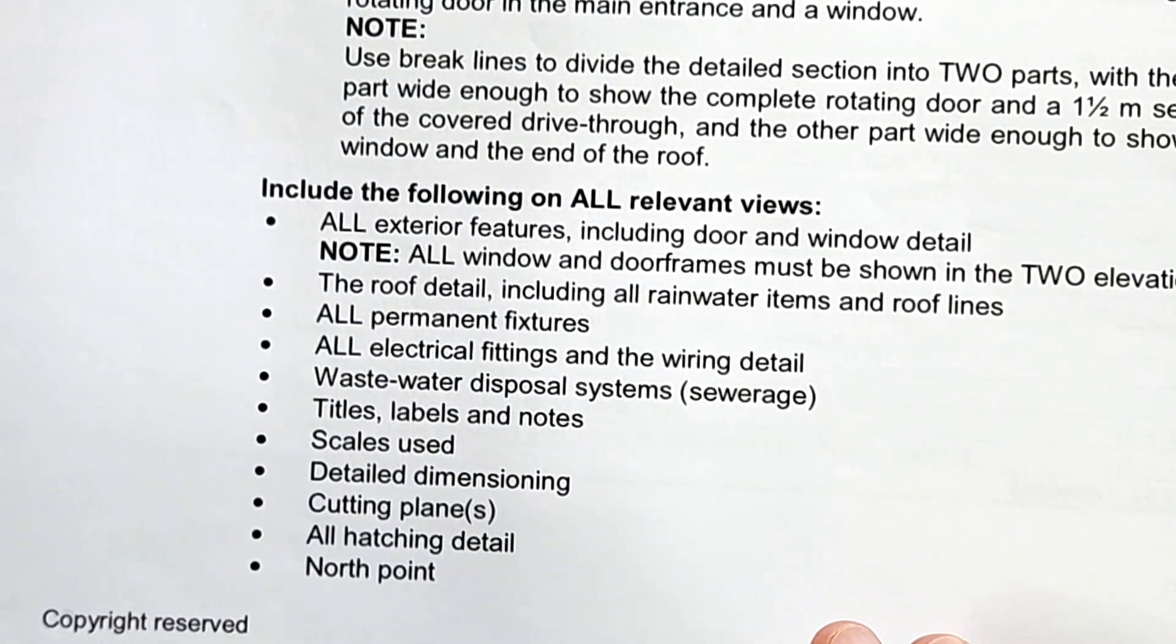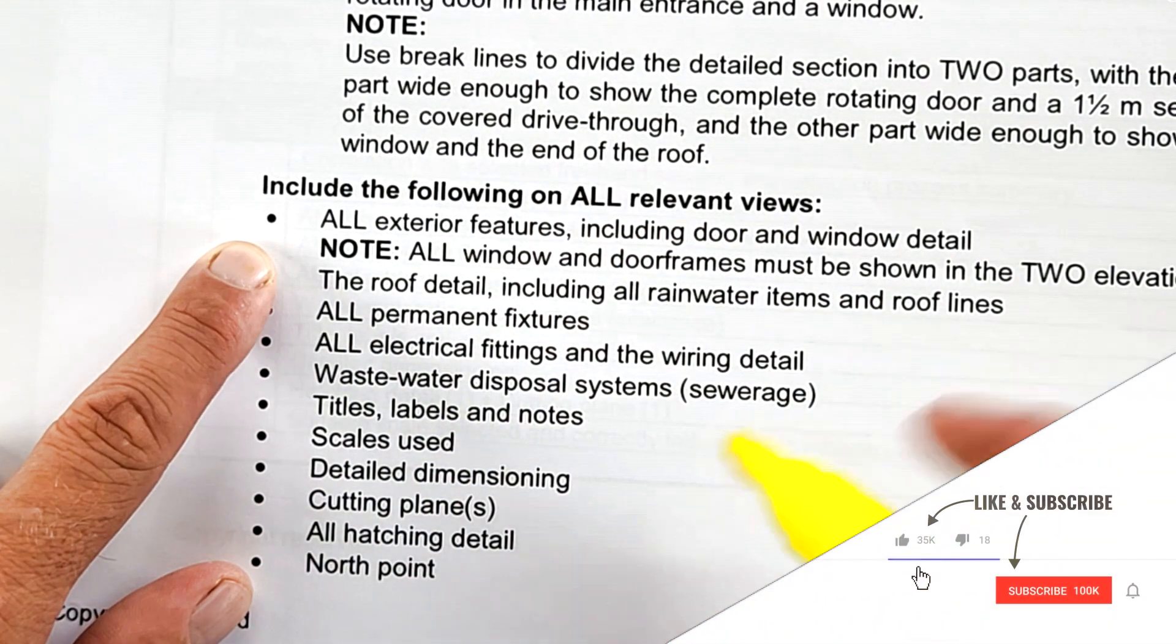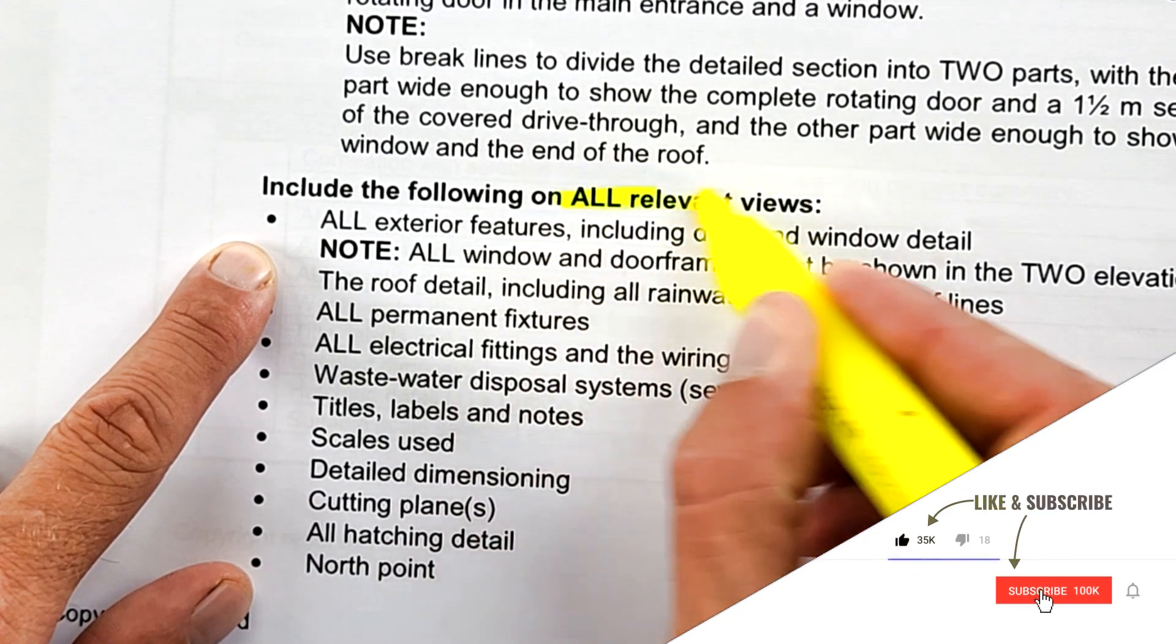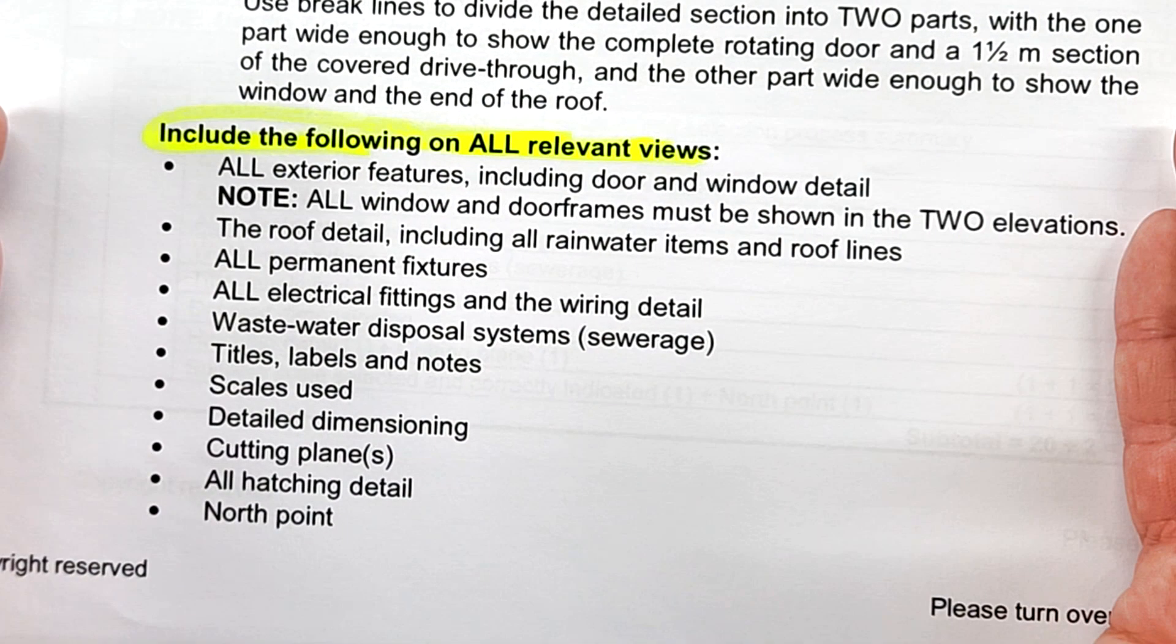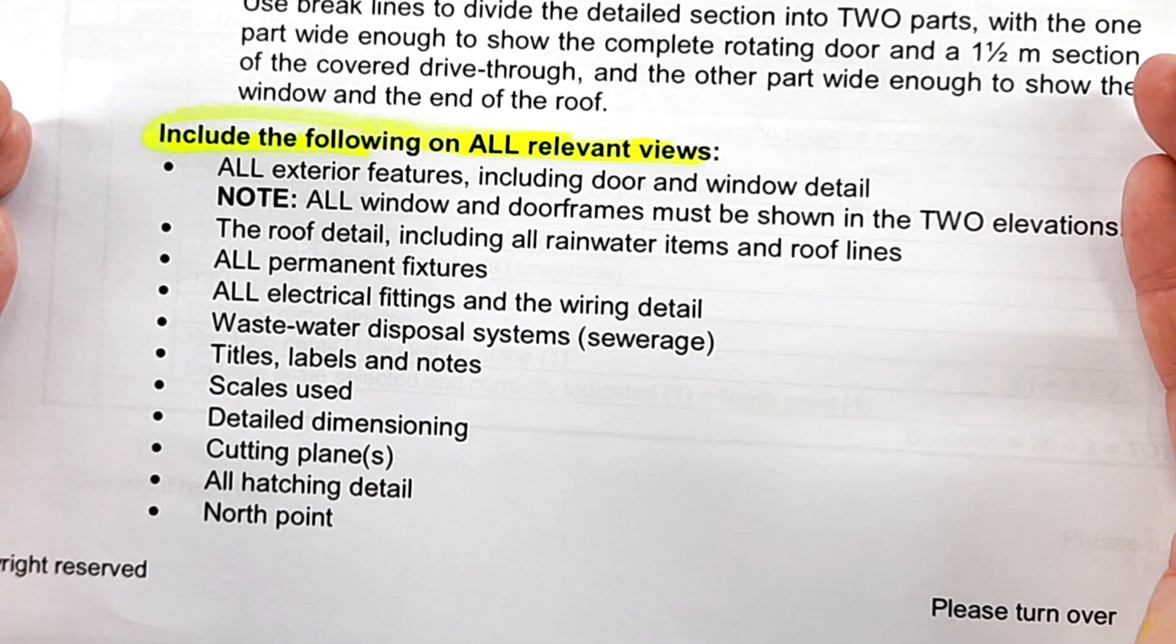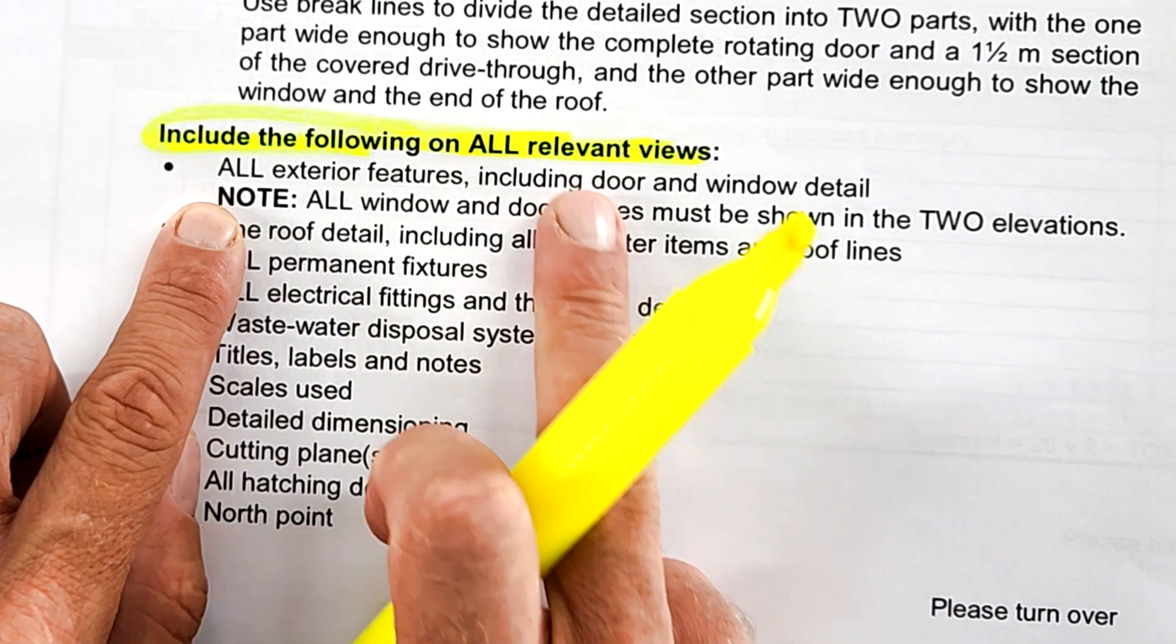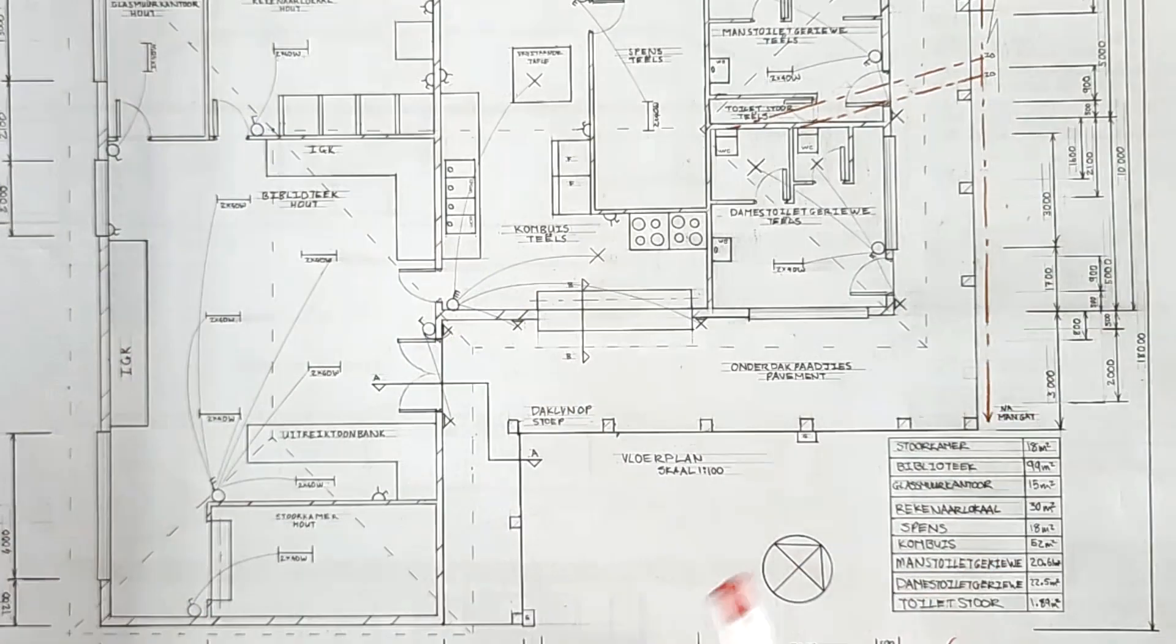Here they talk about elevations and the section, we'll do that in another video. But what are the inclusions that must be in all of the relevant views or drawings? This is a very important part of your PAT document—it's the business end, I say.